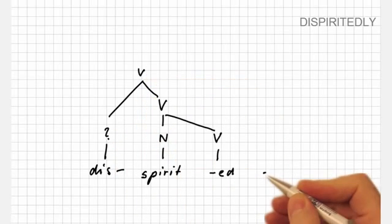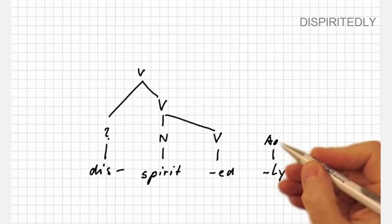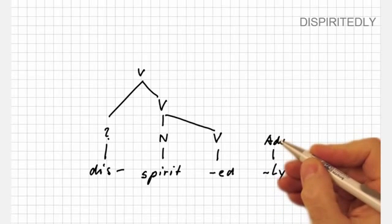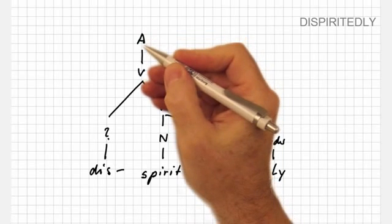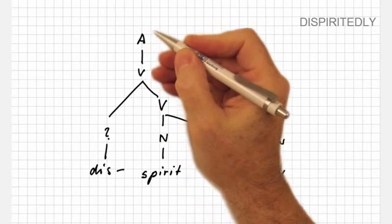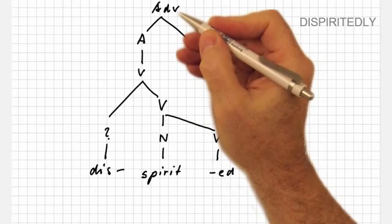Now, we have to attach '-ly', which turns adjectives into adverbs. Thus, '-ly' has the inherent word class adverb. However, we can only attach '-ly' to adjectives. Thus, we have to convert 'dispirited' into an adjective first, and can then generate the new word form 'dispiritedly', which is of course an adverb.